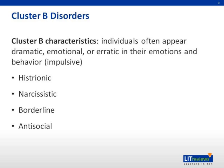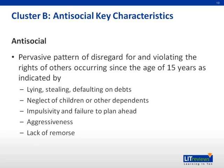Some of the key characteristics of antisocial personality disorder include a pervasive pattern of disregard for and violation of the rights of others, indicated typically by features which include failure to conform to social norms with respect to lawful behaviors, as indicated by repeatedly performing acts that are grounds for arrest, deceitfulness as indicated by repeated lying, use of aliases, or conning others for personal profit or pleasure. There is typically an impulsivity or failure to plan ahead, irritability and aggressiveness, as indicated by repeated physical fights or assaults.